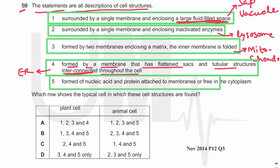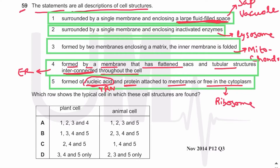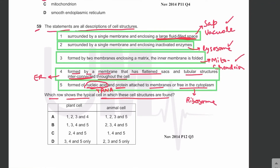The fifth description — formed of nucleic acid and protein, attached to membranes or free in the cytoplasm — describes ribosomes, which are made of ribosomal RNA and proteins. Which row shows the typical cell in which all five structures are found? Plant cells contain sap vacuole, lysosome, mitochondria, ER, and ribosomes — all five. Animal cells also contain structures two through five.